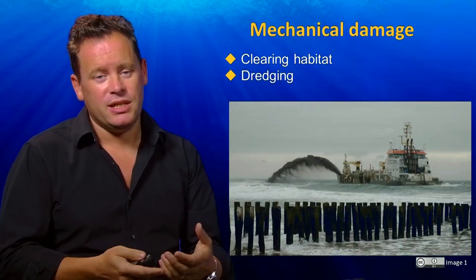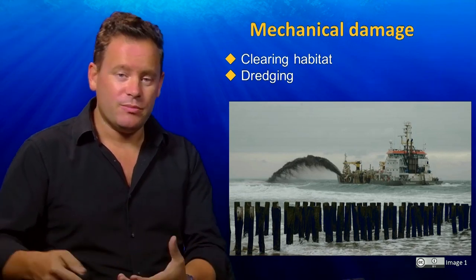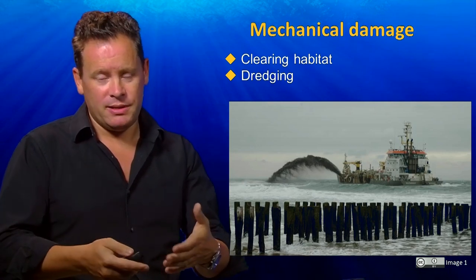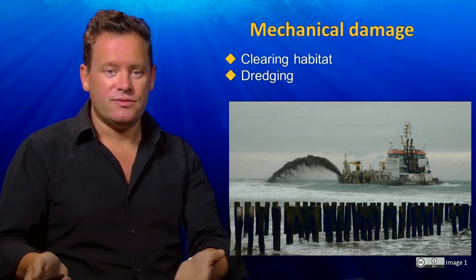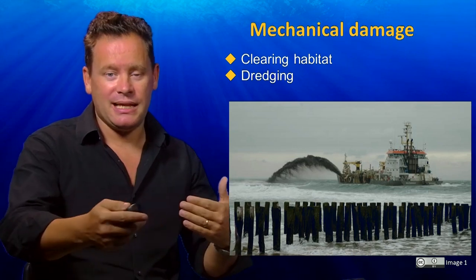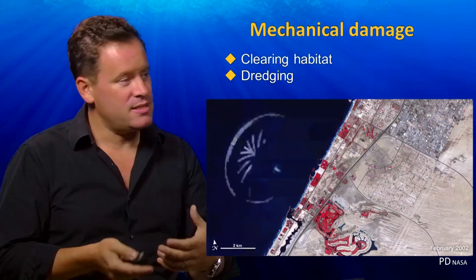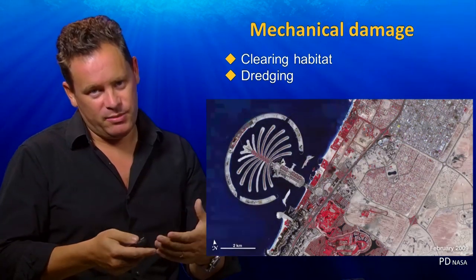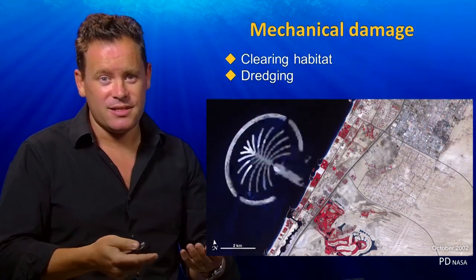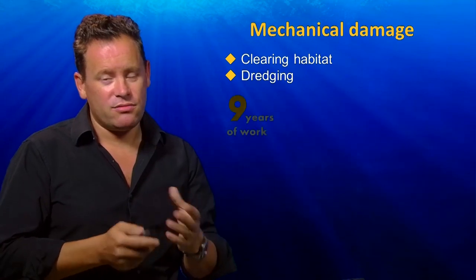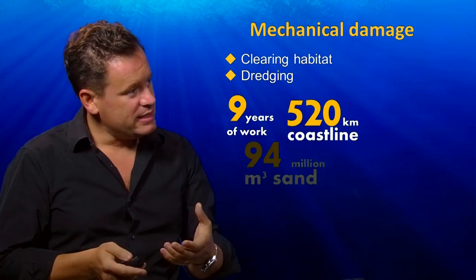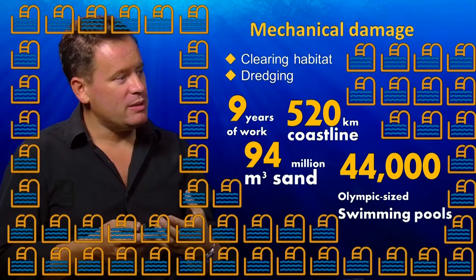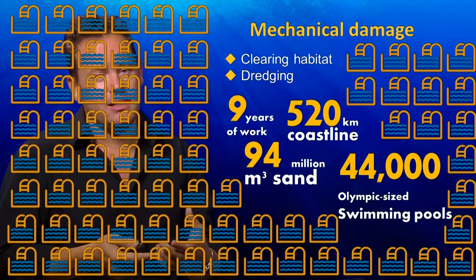A second type of mechanical damage is dredging. We dredge the seabed for various reasons — to deepen navigation channels for ports, or to create sand and sediment to dump into shallow coastal waters and reclaim land. Here's a remarkable example from the Palm Jumeirah development in Dubai. Satellite images document the tremendous development of new land, resorts, and living areas off Dubai's coast. It took nine years to complete, increased the coastline by 520 kilometres, and generated 94 million cubic metres of sand — enough to fill 44,000 Olympic swimming pools.